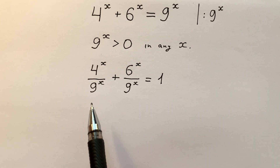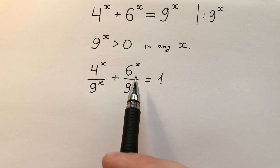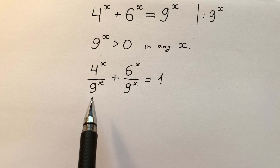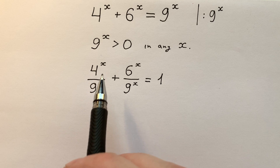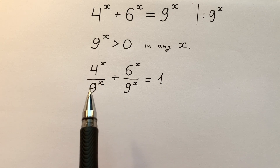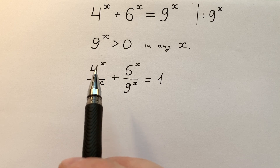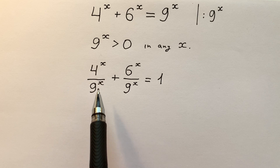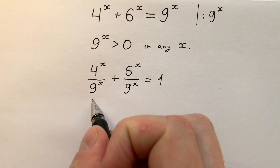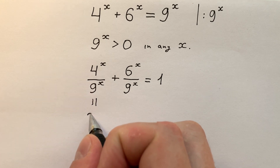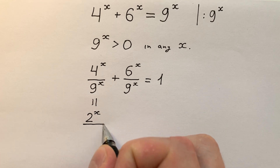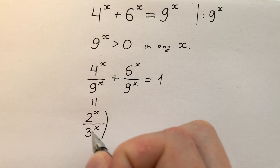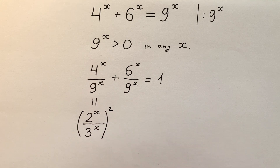At the left side of this equation we have a sum of two different terms. Let's look at them attentively. The first term is 4 to the power of x divided by 9 to the power of x. We can say that 4 equals 2 squared and 9 equals 3 squared. That's why we can write the first term as 2 to the power of x divided by 3 to the power of x, all to the power of 2, plus...